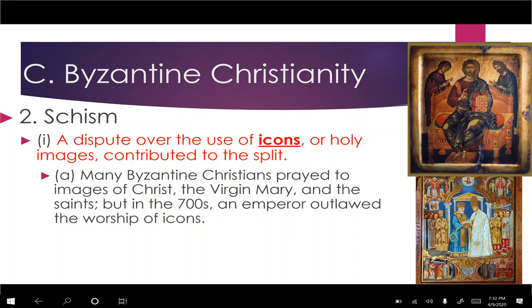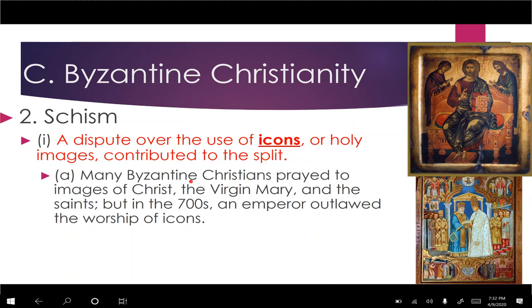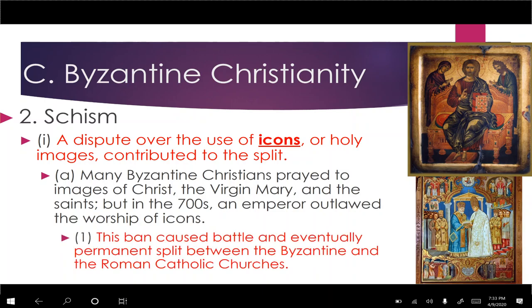From a historian's skeptical viewpoint, we can also ask why the emperor cared so much about banning icon worship. On the surface, he was worried about idol worship — but looking deeper, the emperor may also have been flexing his muscles over the Roman Catholic Church, asserting his authority. This ban contributed to permanently splitting the Eastern Orthodox Church from the Roman Catholic Church.